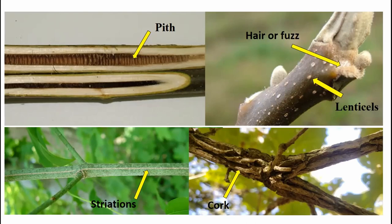Some species will have lines or striations on the bark — wahoo or American burning bush has very diagnostic four white lines running up and down on the twigs, almost making the twig look square. Bur oak and sweetgum will have corky ridges along the stems.